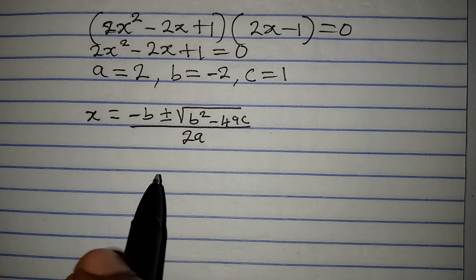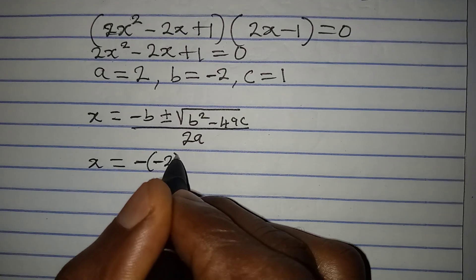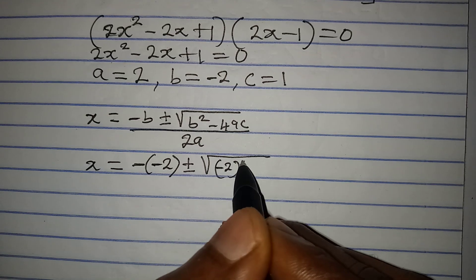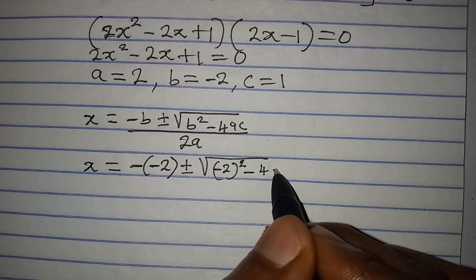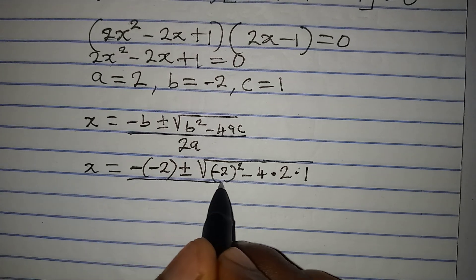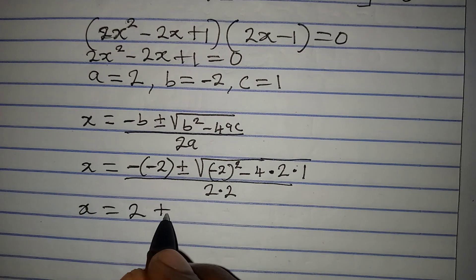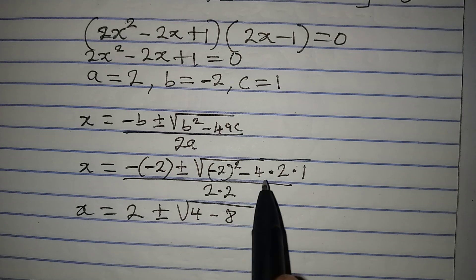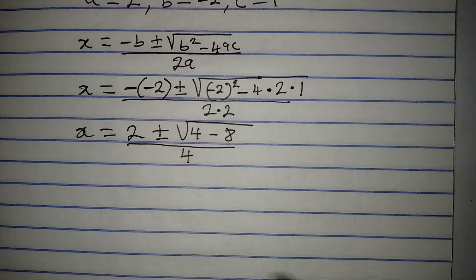Substituting into the formula: x equals negative of negative 2, plus or minus the square root of (negative 2) squared minus 4 times 2 times 1, all over 2 times 2. So x equals 2 plus or minus the square root of 4 minus 8, all over 4. That gives 2 plus or minus the square root of negative 4, over 4.